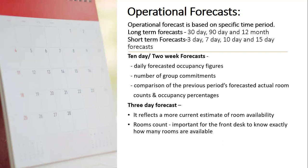A 10-day forecast always includes day-to-day forecasted occupancy figures including room arrivals, room departures, room count, and house count. It also includes the number of group commitments with a listing of each group name, arrival and departure dates, number of rooms blocked, number of persons, and quoted room rates. Additionally, it includes a comparison of the previous period's forecasted and actual room counts and occupancy percentages.